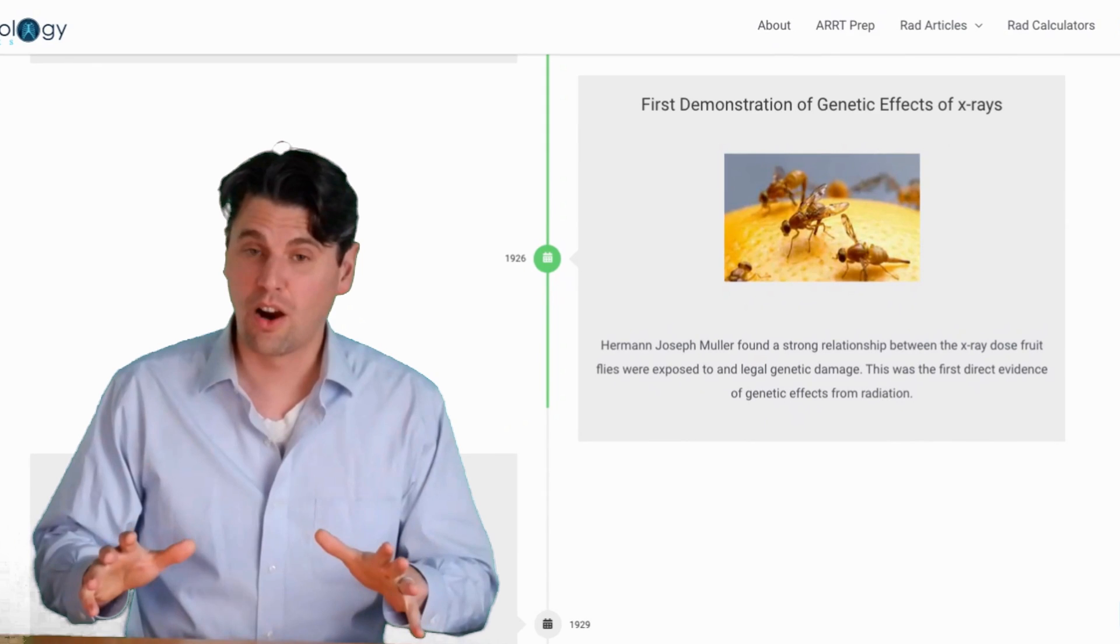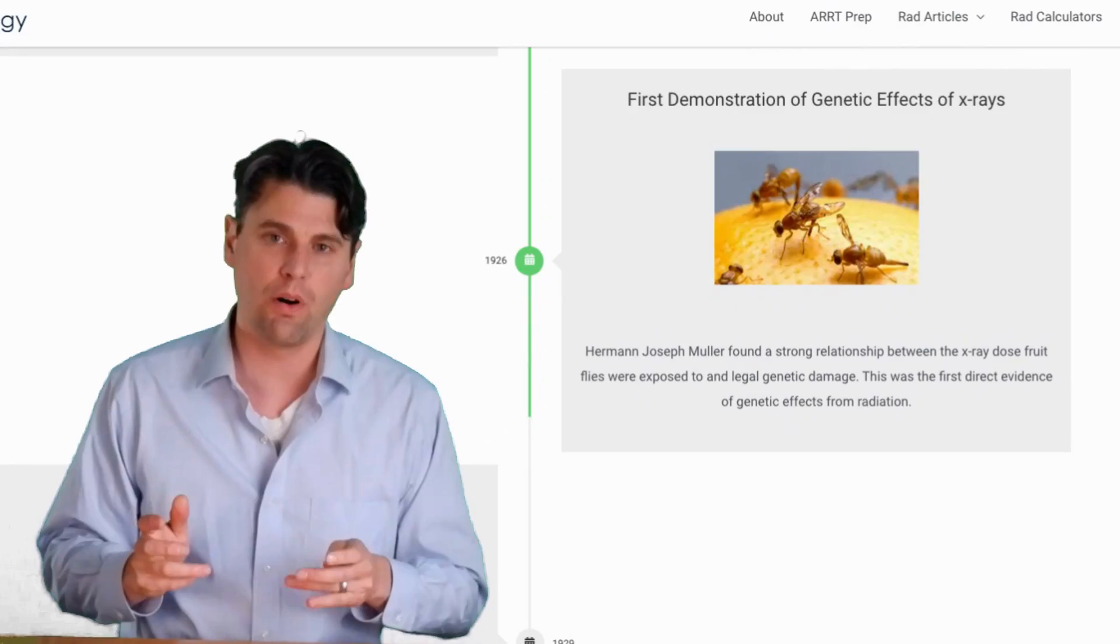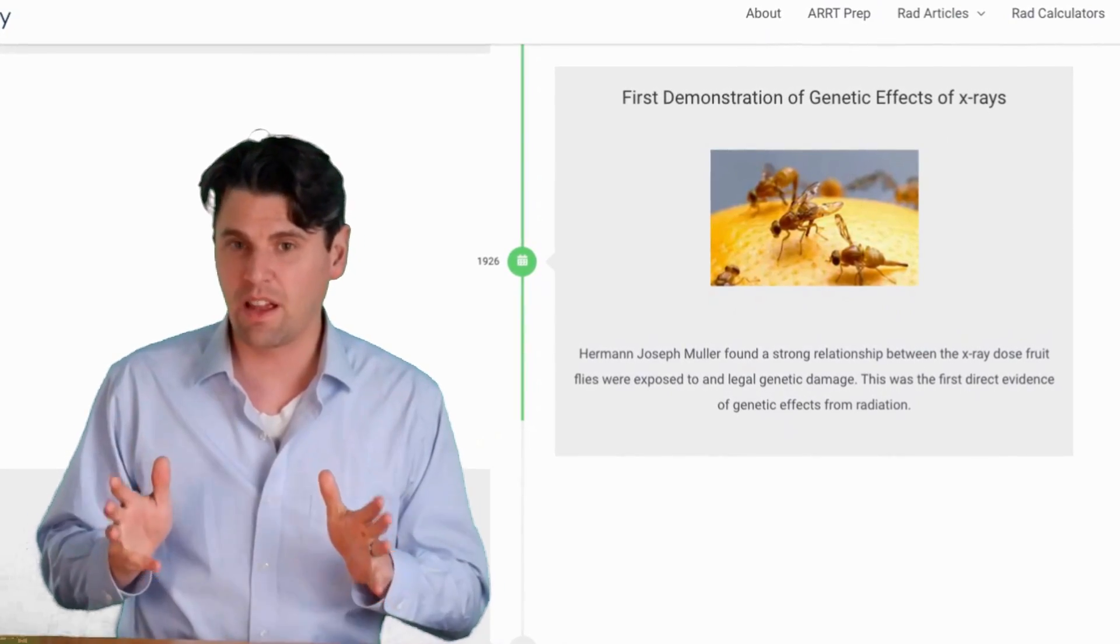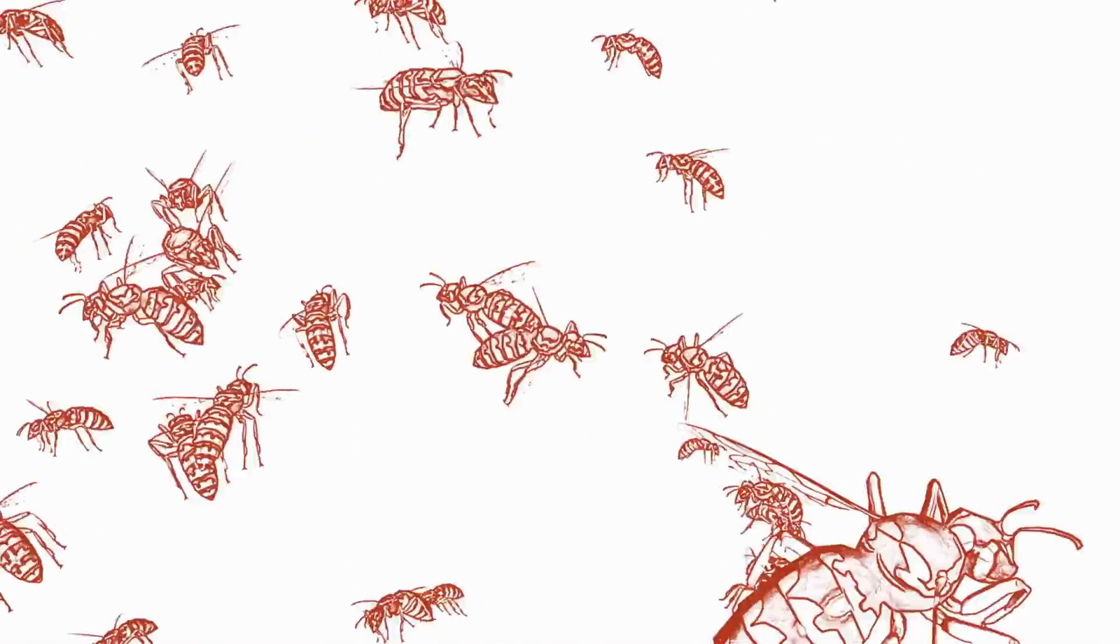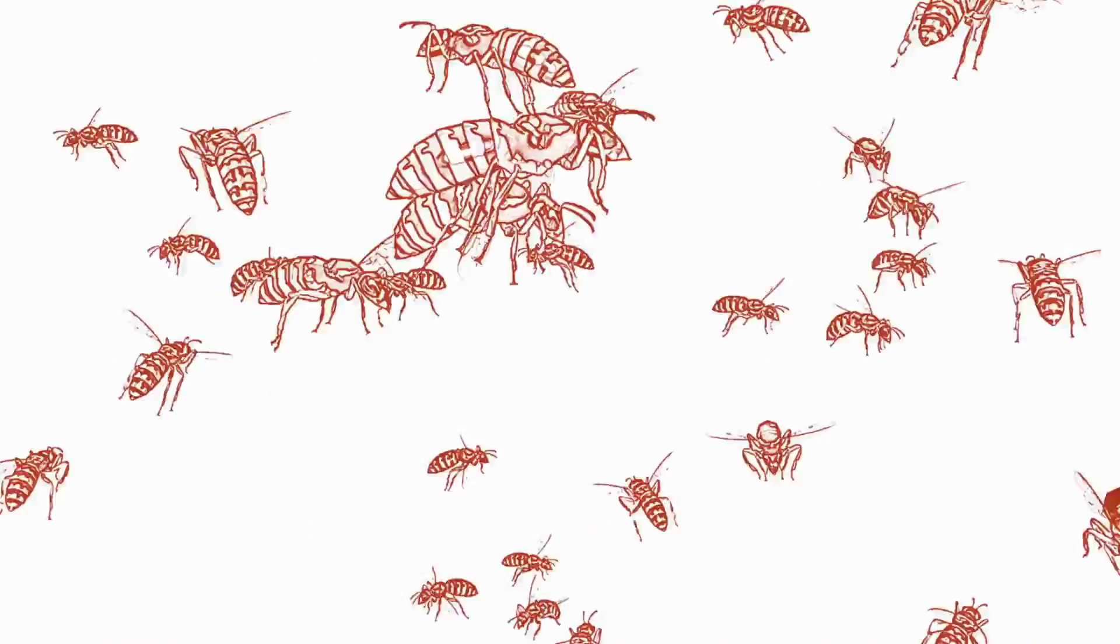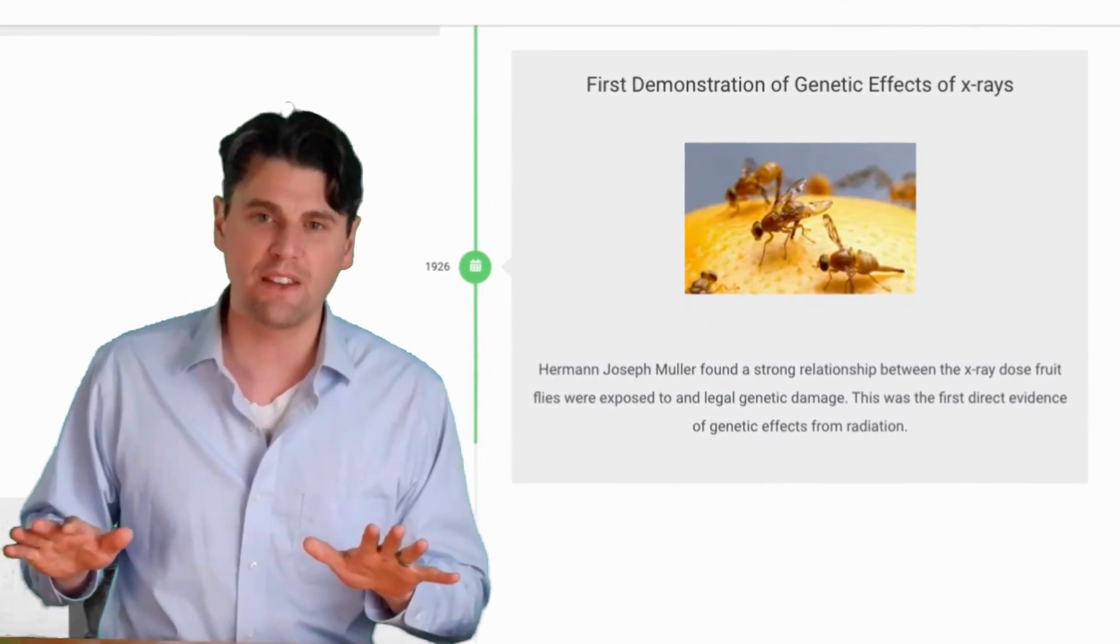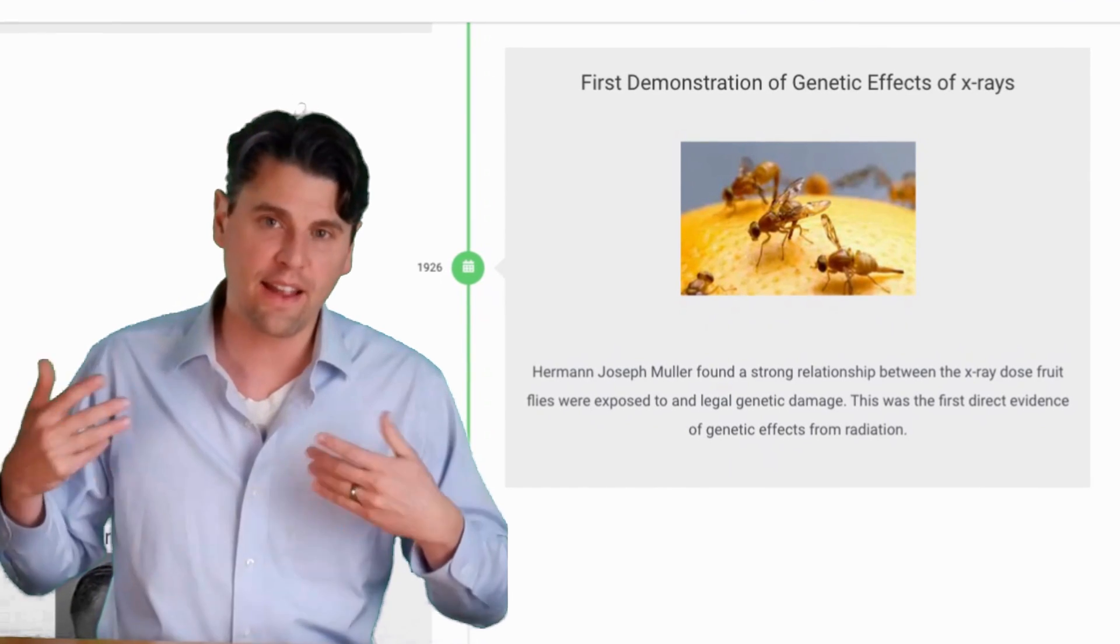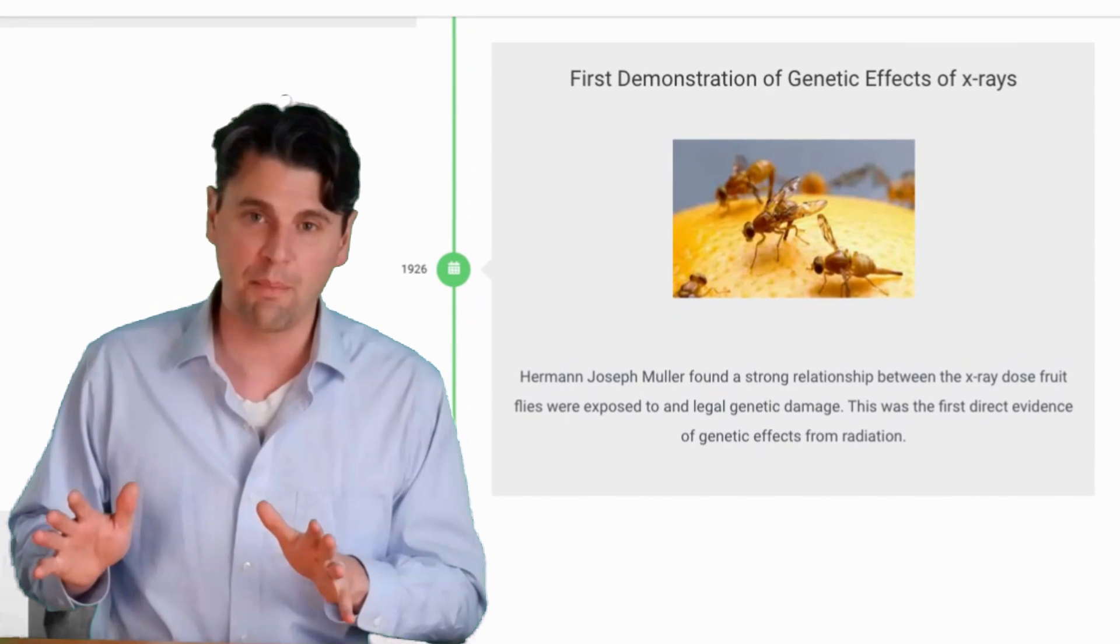In 1926, Herbert Joseph Mueller demonstrated the genetic effects that are possible when X-ray radiation is used. In this case, it was on fruit flies. So the mutation rate was actually higher for fruit flies when exposed to significant radiation. Again, these aren't new mutations, but they're actually higher incidence of mutations which naturally occur within a population.